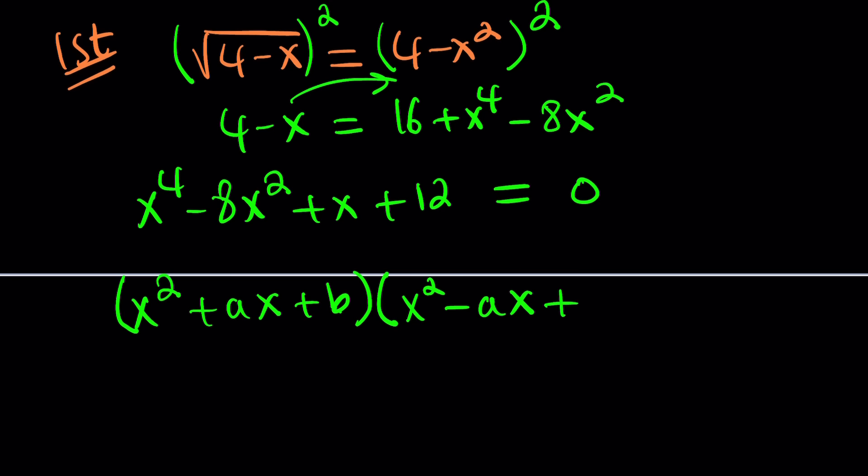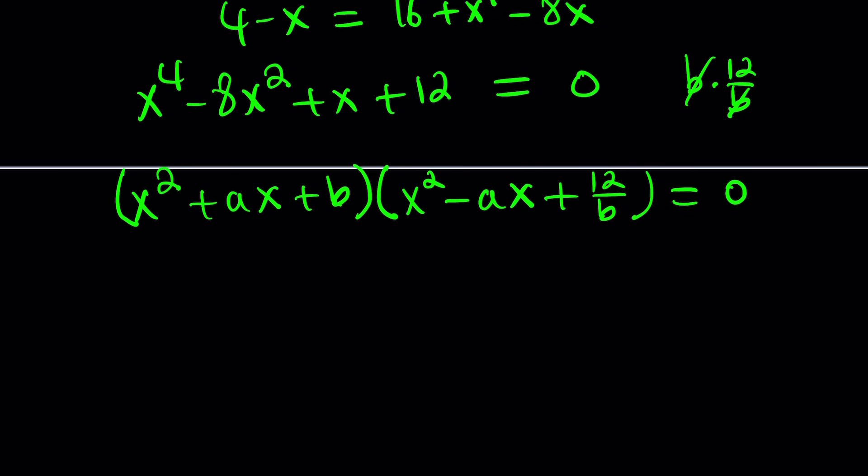Where does x cubed come from? Think about it. And the constant term can be a c, but you want to reduce the number of variables as little as possible. So, b is a constant, 12 is a constant. b times what equals 12? The answer is 12 over b. It's that simple.